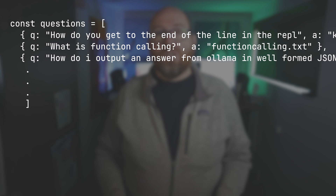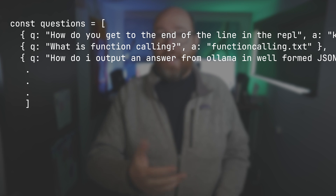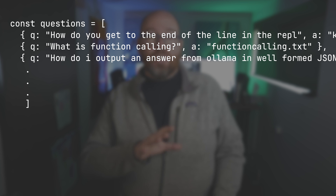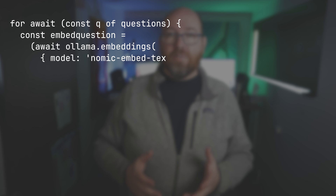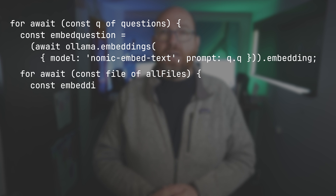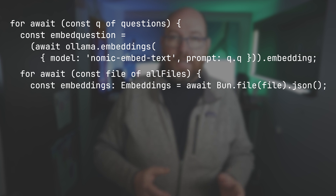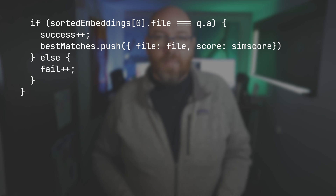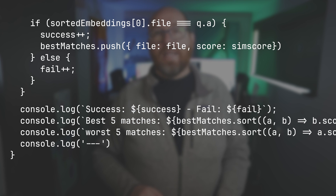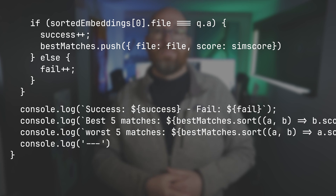So now 2-search.ts takes all those files and tries to determine the right chunking settings. First, I created an array of questions along with the right answer, where the answer is the script that talks about that question. Then for each question, I get the embedding for the question and open each file with the embeddings from my transcripts and do the similarity search. For embed files that got the answer right, I find 5 chunk sizes that answered it best and worst but still correct. Then I spit out the results.